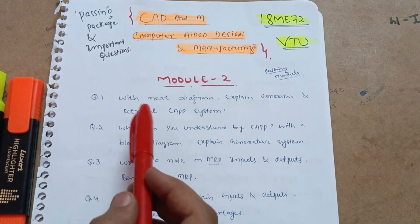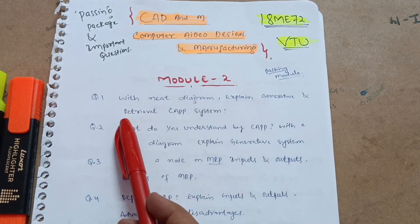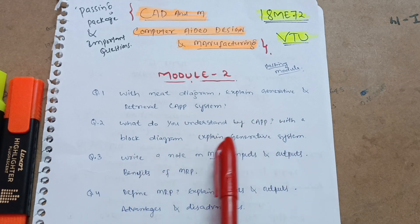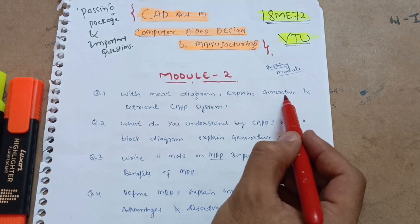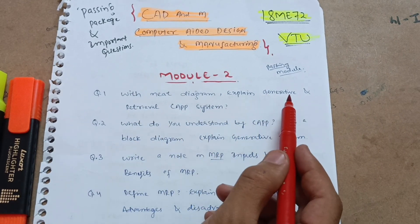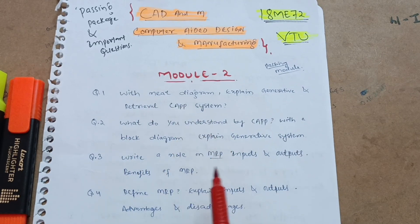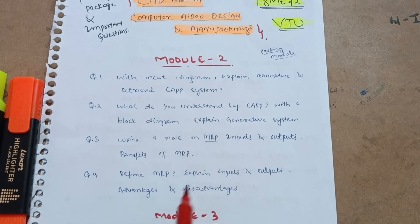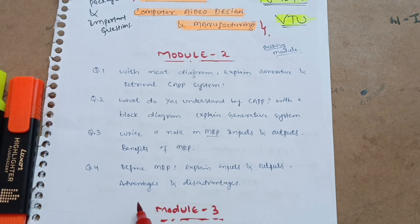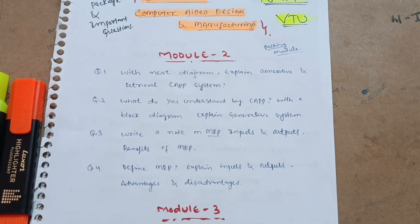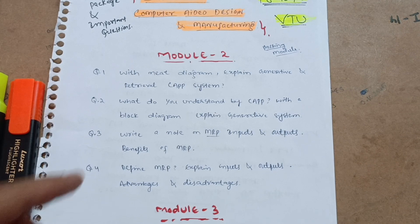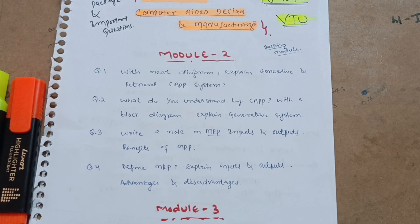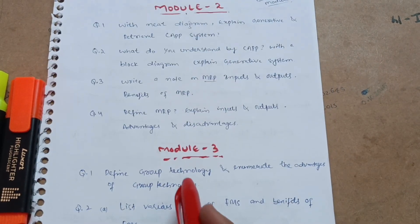These questions are repeated in the examination. The first important question is: with a diagram, explain Generative and Retrieval CAPP systems. The next is: what do you understand by CAPP? With a block diagram, explain the Generative system. Sometimes they separately ask for the Generative system and sometimes the Retrieval CAPP system — each is 10 marks. Next, write a note on MRP inputs and outputs and benefits of MRP, or they may ask you to define MRP and explain its inputs, outputs, advantages and disadvantages. If you prepare these four questions, you will get 20 marks in the examination.